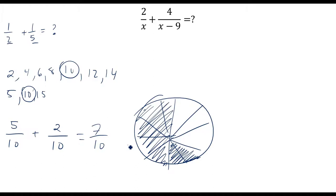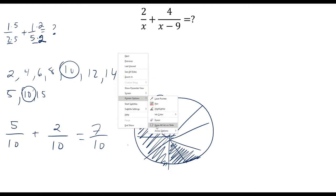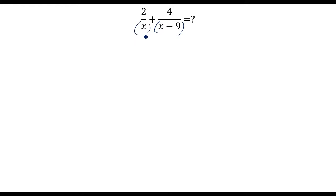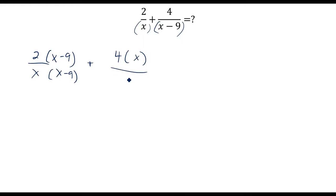The same idea holds with variables. For 2/x + 4/(x-9): take each denominator and multiply it onto the top and bottom of the other fraction. So take 2/x and multiply both top and bottom by (x - 9), and take 4/(x-9) and multiply both top and bottom by x. Remember, you only need to do the bottom once since they'll be the same — so x times (x - 9), distributing gives x² - 9x as your new denominator.